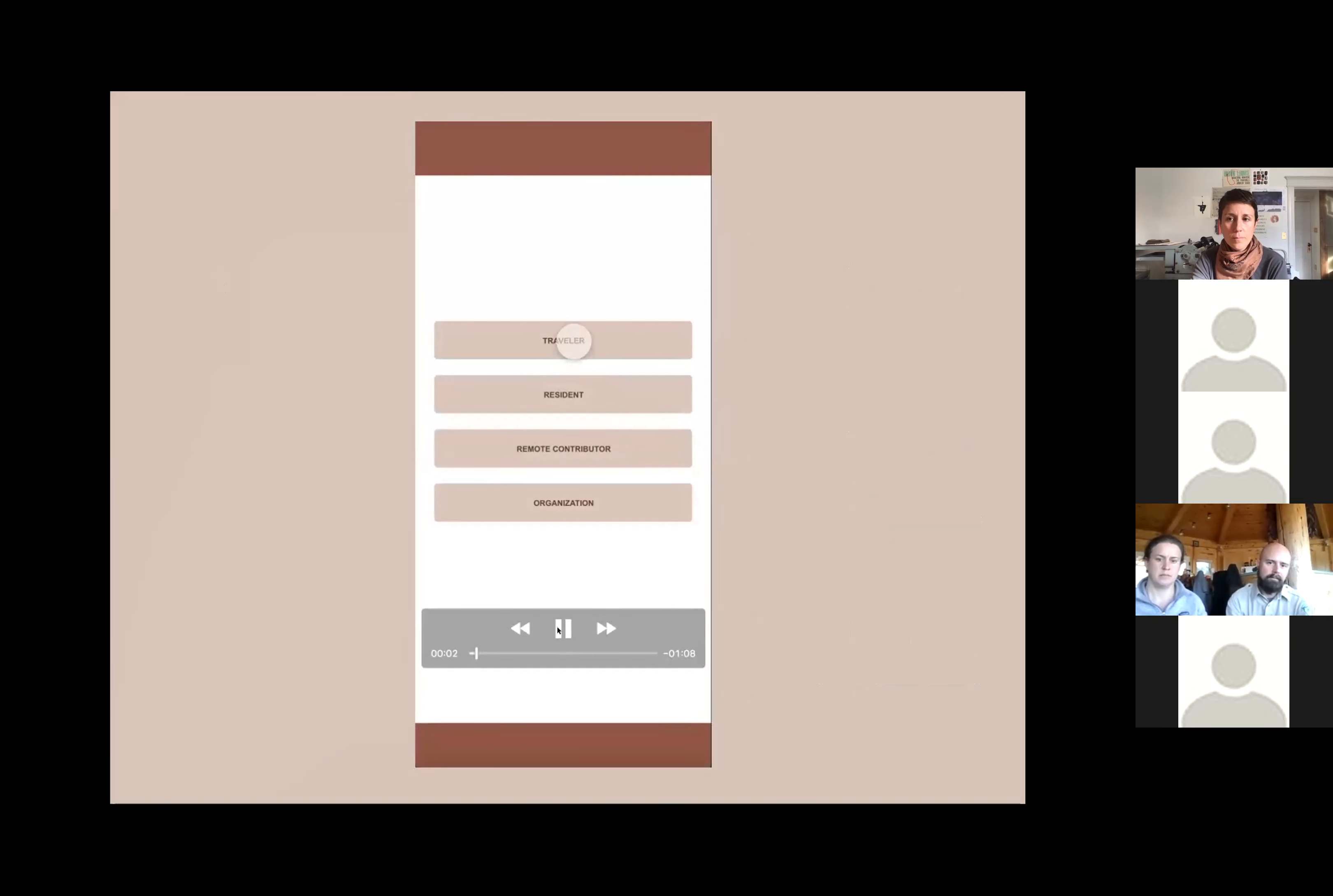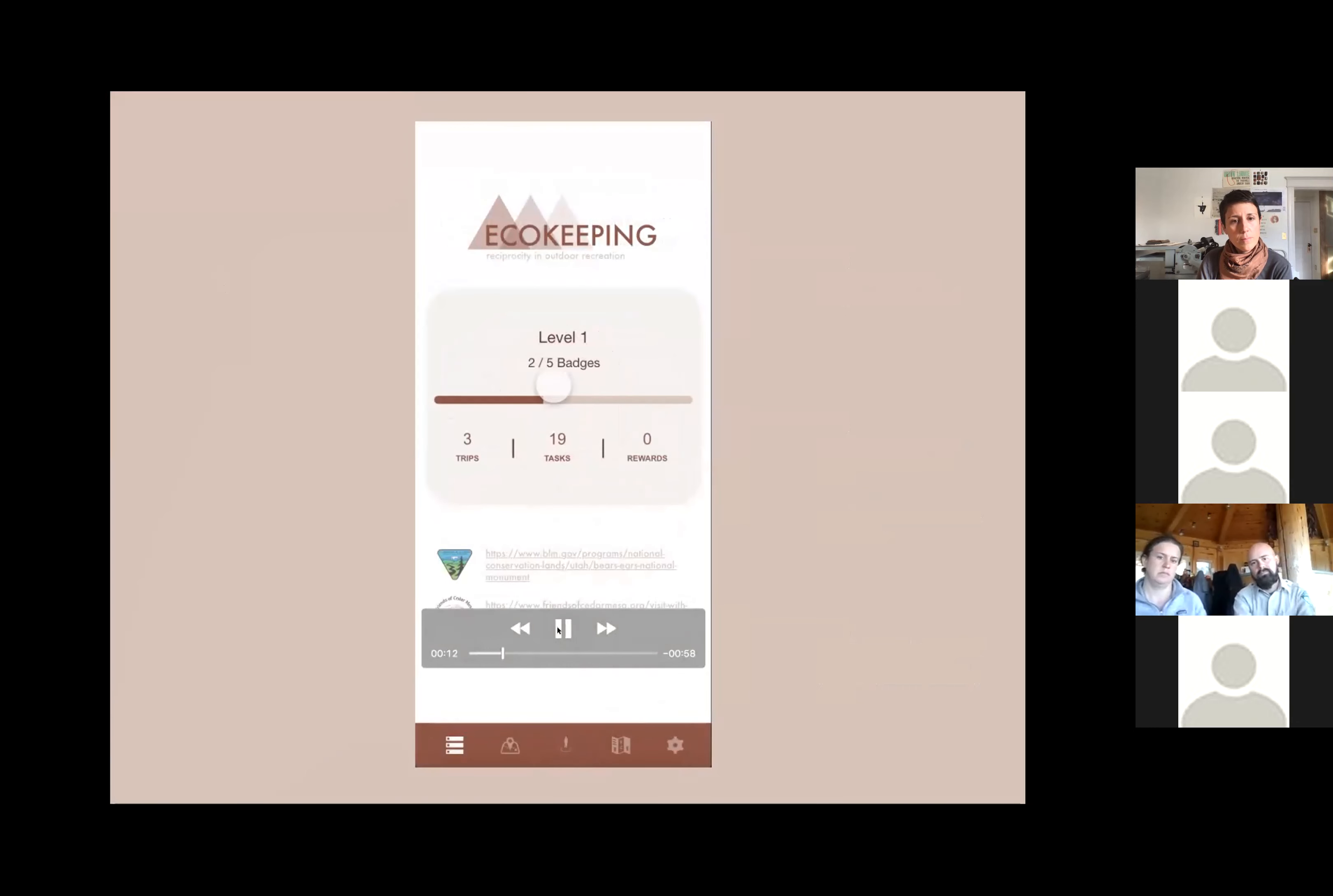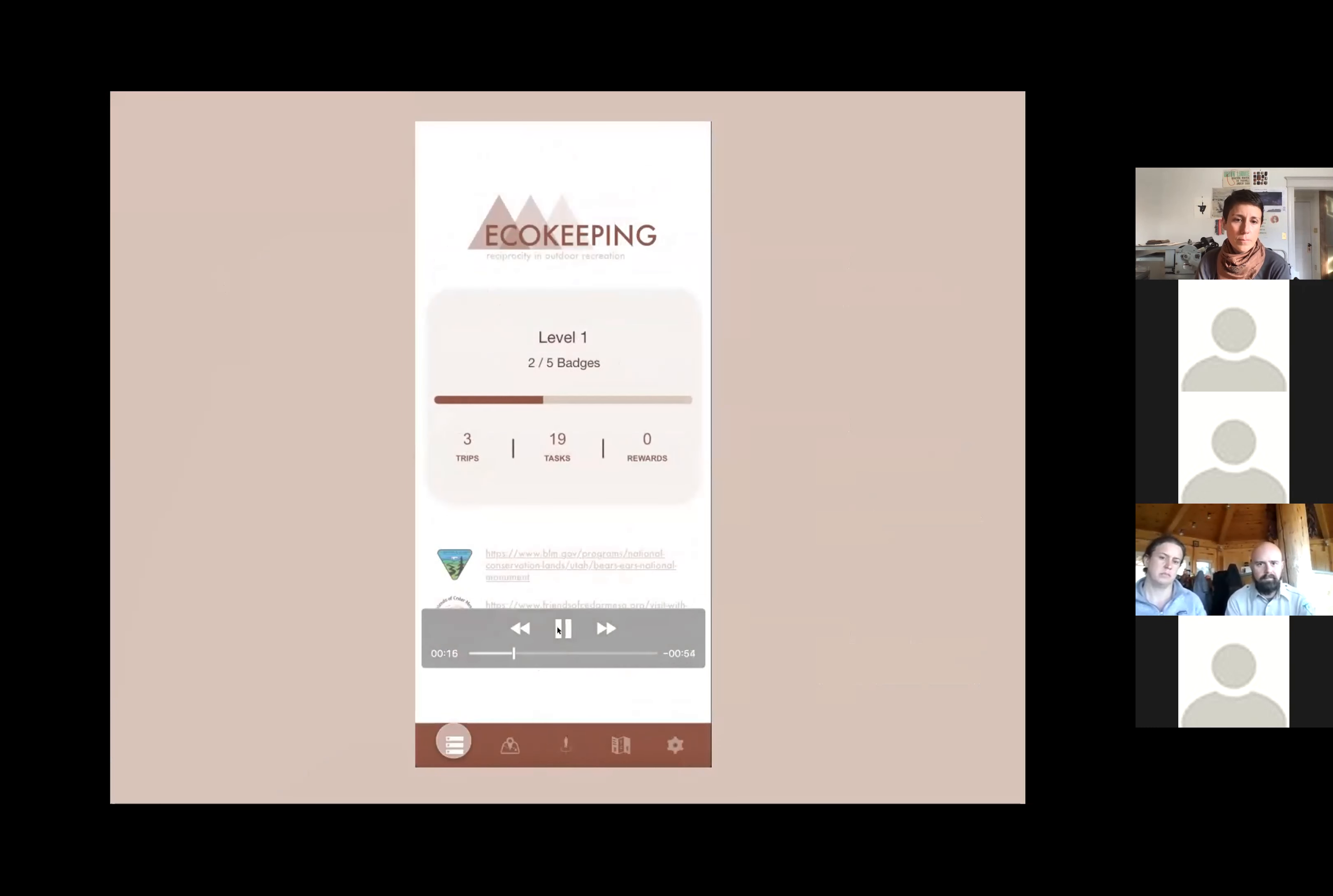So this shows a walkthrough of my prototype, starting with the type of user, signing up as a traveler, and then a brief overview of the app. Then the user gets started at the dashboard where you can see trips, completed tasks, badges, and the current level. There's also a link to the BLM information on the monument, as well as to Friends of Cedar Mesa's visit with respect guidelines.